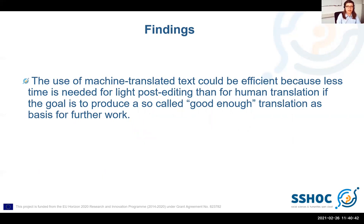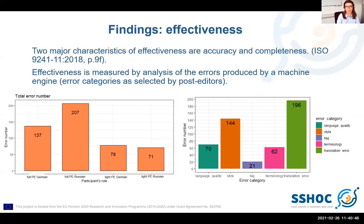The use of machine translated text could be efficient because less time is needed for light post-editing than for human translation, if the goal is to produce a so-called good enough translation as basis for future work. The second dimension I am presenting is effectiveness. Two major characteristics of effectiveness are accuracy and completeness. Effectiveness is measured by analysis of the errors produced by a machine engine. The task was for post-editors not only to edit and correct the machine translations, but also to select error categories.